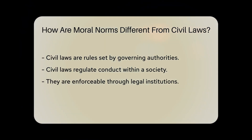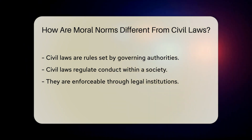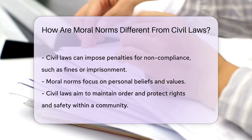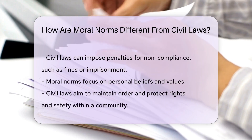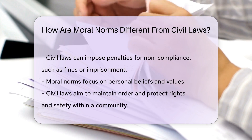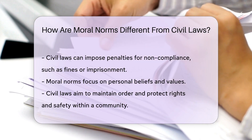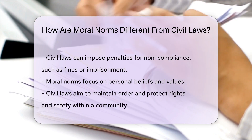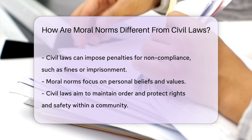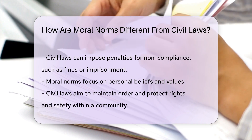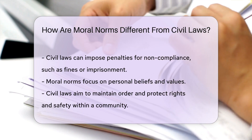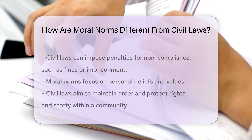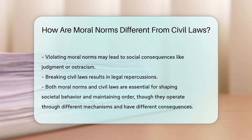While moral norms focus on personal beliefs and values, civil laws aim to maintain order and protect the rights and safety of individuals within a community. Violating moral norms may lead to social consequences like judgment or ostracism, while breaking civil laws can result in legal repercussions, such as fines or imprisonment.